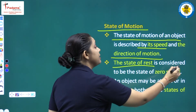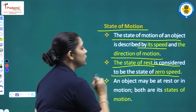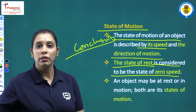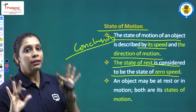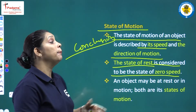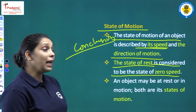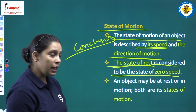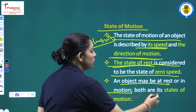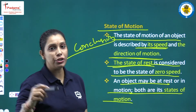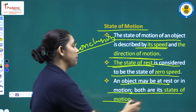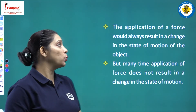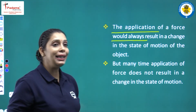The state of motion is described by its speed and the direction of motion. The state of rest is considered to be the state of zero speed. Both rest and motion are described as the state of motion of an object — whether it is moving or resting, both are its state of motion.